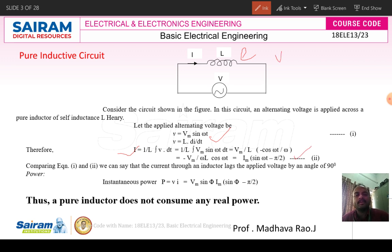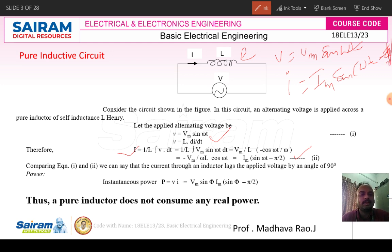In the inductive circuit, V is equal to Vm sin(ωt) but current i is equal to Im sin(ωt − π/2). Now if we compare these two current and voltage equations, you can say that current lags the voltage by an angle π/2. If you take voltage as reference, current lags the voltage by an angle π/2.